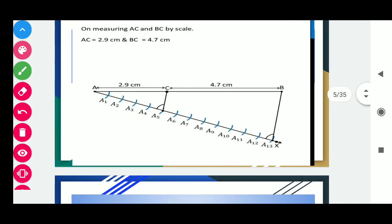On measuring AC and BC by scale, AC is 2.9 cm and BC is 4.7 cm.